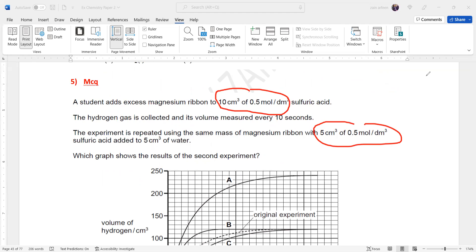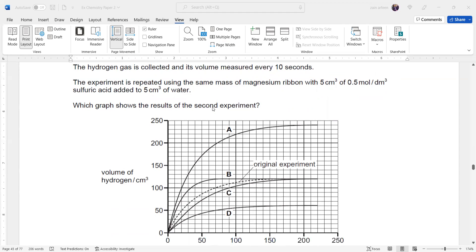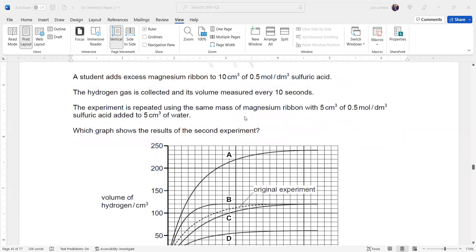The amount of product will also decrease. This is more sulfuric acid in the first experiment, and now we have fewer particles of sulfuric acid. Water is just to make the solution dilute. If we use less sulfuric acid, less concentrated sulfuric acid, the reaction rate will decrease as well.